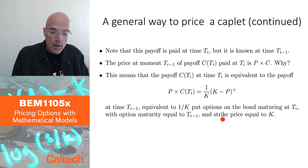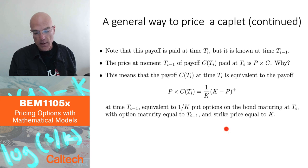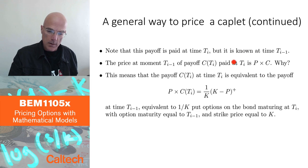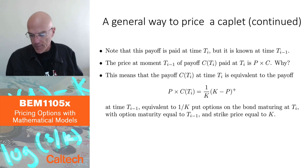So, once again, caplet is paid at Ti, but we use the fact that its payoff is already known at time Ti minus 1. And then we use this logic here to conclude that pricing the payoff equal to the caplet payoff, C of Ti at Ti, is the same as pricing this payoff, which is 1 over K put options, paid at Ti minus 1. So, it's put options written on a bond which matures at Ti, but the options themselves mature at Ti minus 1.